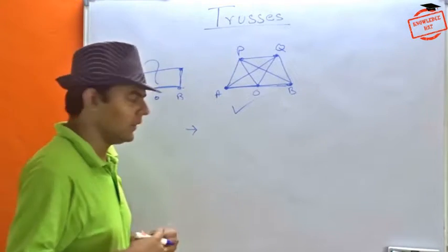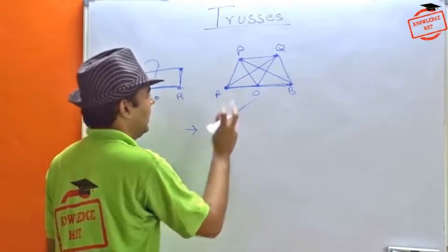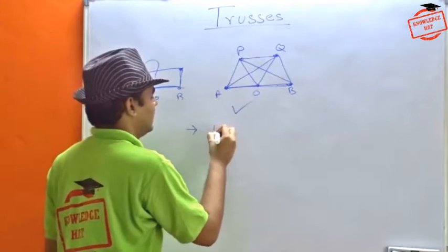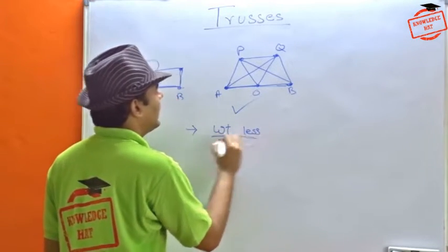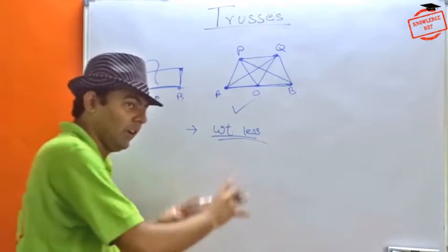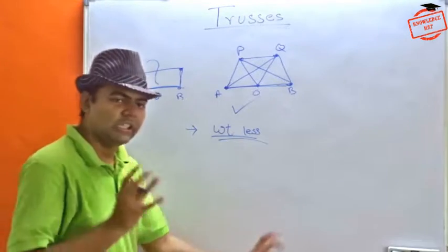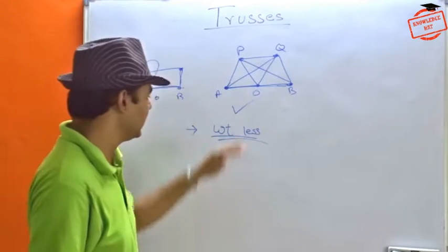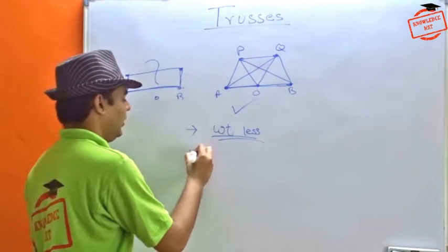For our mechanics, we have to take each of these members as weightless. If they don't have any weight, I mean they do have weight, they are iron or steel bars. But for our consideration, we will take them as weightless.